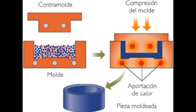Moldeo por compresión: este proceso consiste en introducir el material termoestable en forma de polvo en un molde hembra, que es comprimido con un contramolde macho mientras el material es ablandado para hacerlo maleable. Toma la forma de los moldes, luego se enfría y se extrae el objeto.